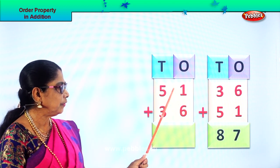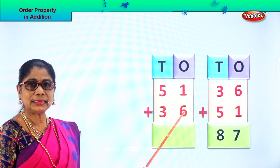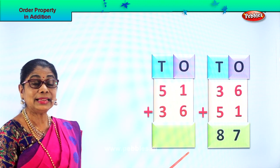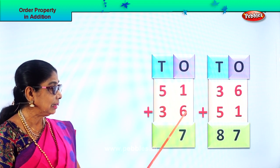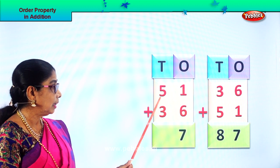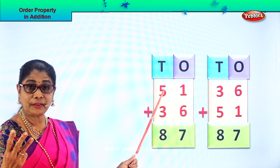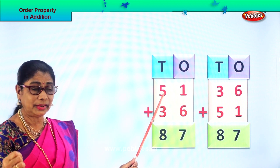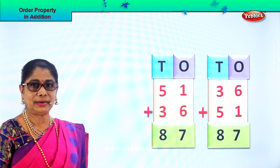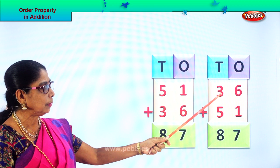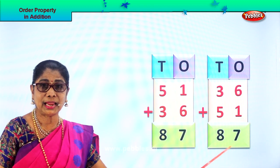Now let's add 51 plus 36. Let's add the ones place first: 6 plus 1 is 7 ones. Then 5 tens plus 3 tens — 5 in the mind, 3 on your fingers. After 5: 6, 7, 8. So 51 plus 36 is 87. Whether it is 36 plus 51 or 51 plus 36, your answer is the same.